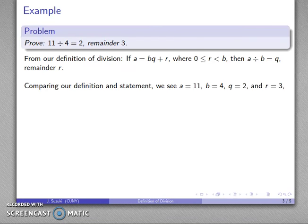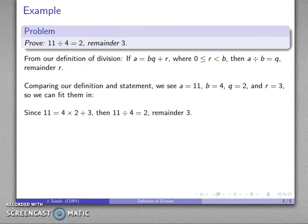And I can just compare our definition and our statement. If I compare my statement to my definition, let's see. I have A must be 11, B must be 4, Q must be 2, R has to be 3, and so I'll fit them in. And I have 11 equals 4 times 2 plus 3. Then 11 divided by 4 is 2 with remainder 3.